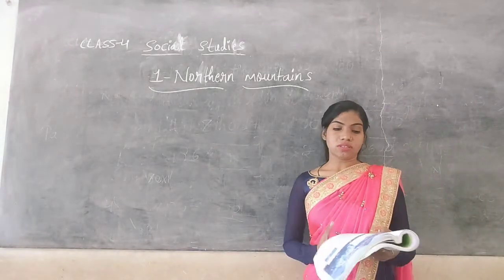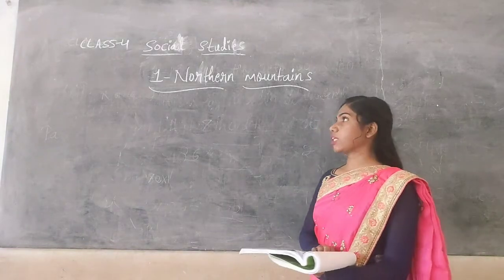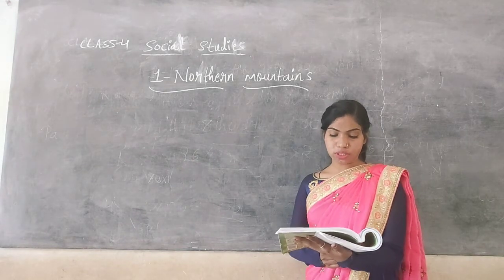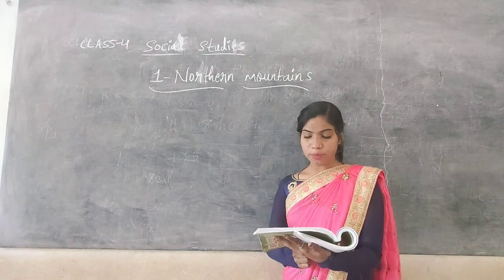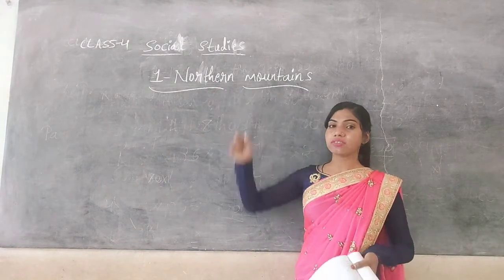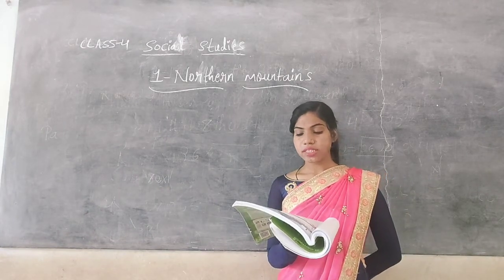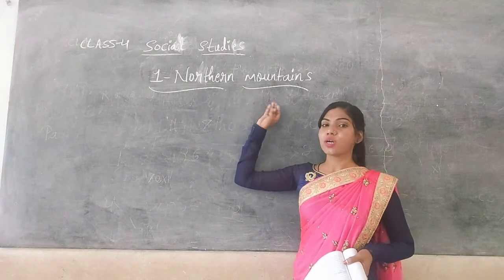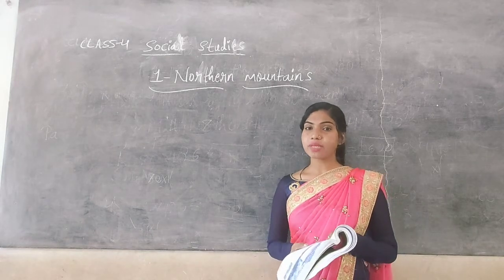Open your textbook. The first chapter is the northern mountains. You can see the stretch of the northern mountains. The northern mountains include the Himalayas and the Karakoram mountain ranges. These northern mountains spread across the northern boundary of India.